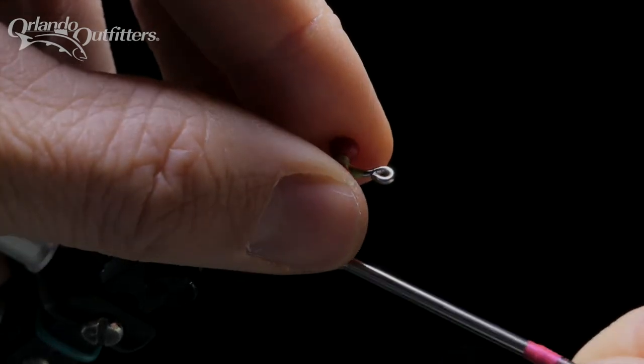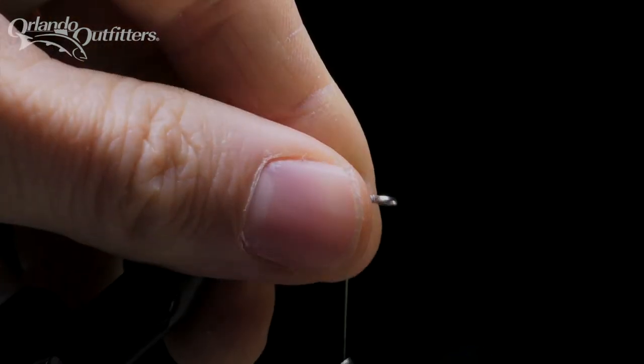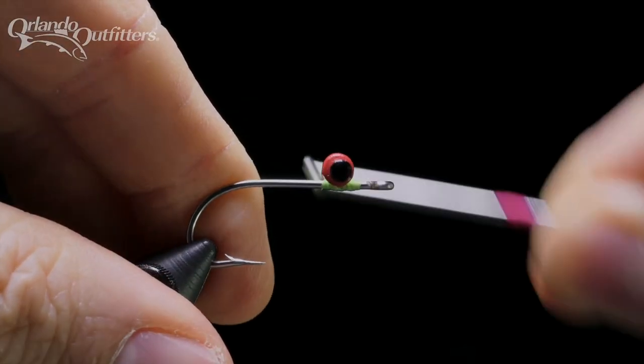Make sure the eyes are where you want them. Now pull down firmly to snug these wraps, then place two locking wraps both behind and in front of the eyes.